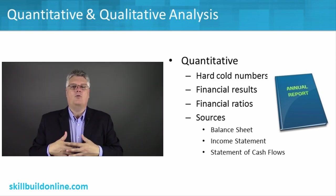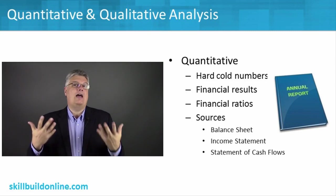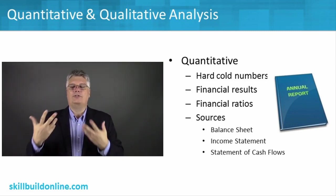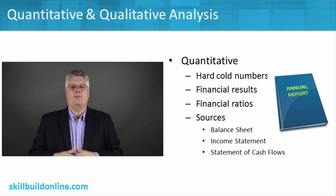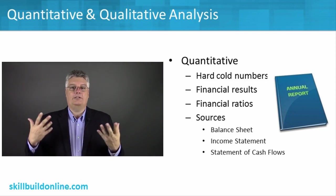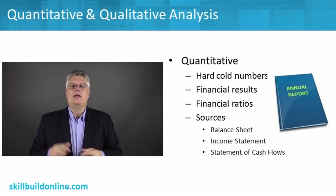What's the difference? Well, qualitative is not numeric. It's those non-number type ways, and we'll look at that in a second. And then quantitative is the numbers — the hard cold numbers.